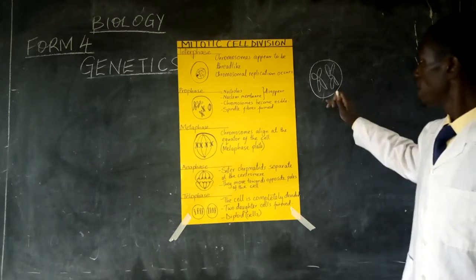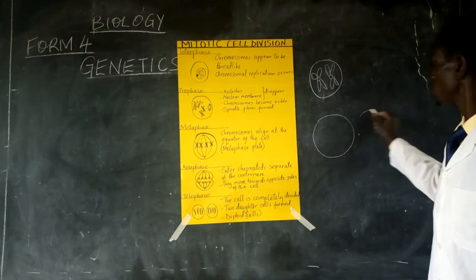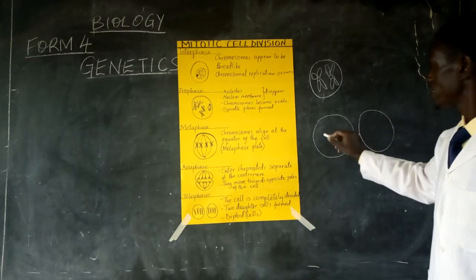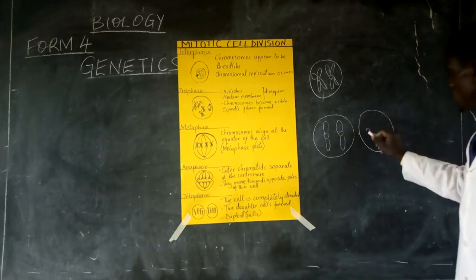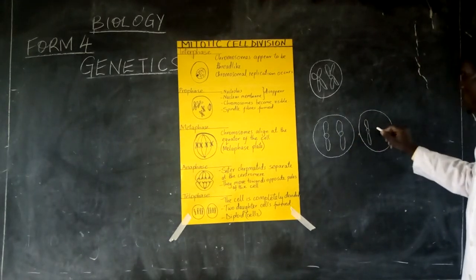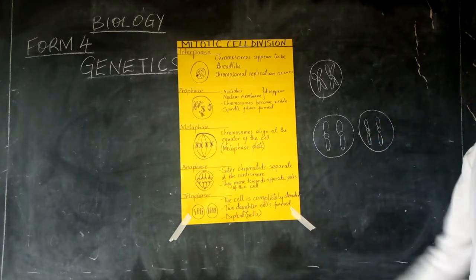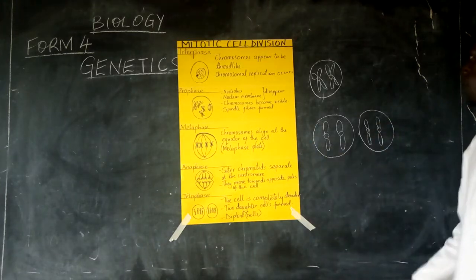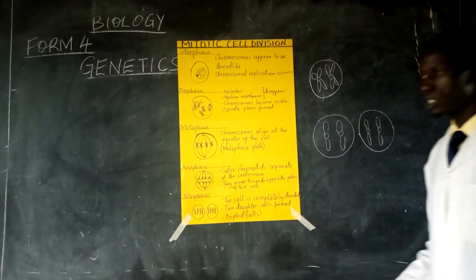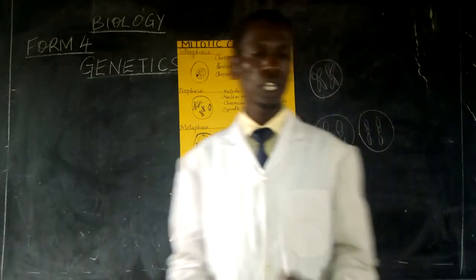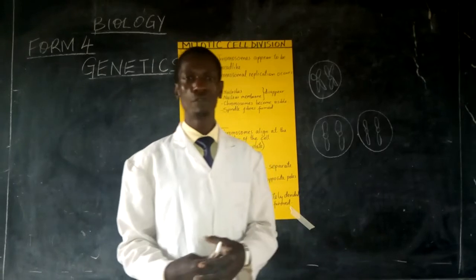— this cell will divide, such that at the end we'll be having two daughter cells, and each cell will be containing two chromosomes, which are equivalent to the number of chromosomes found in the parental cell. When you look at this one, it is a single strand of chromosome — we call it a chromatid. I think you still remember what I said earlier concerning the behavior of chromosomes.